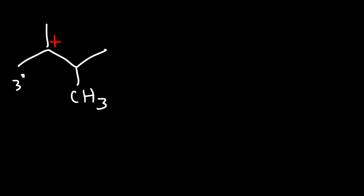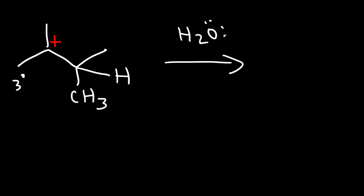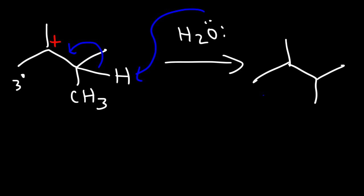The best place to put the double bond is right in the middle, and that leads to the major product. We take off this hydrogen using water as a weak base, and this gives us the final major product — a tetrasubstituted alkene. When dealing with the E1 reaction, the major product will simply be the most stable alkene that can form.